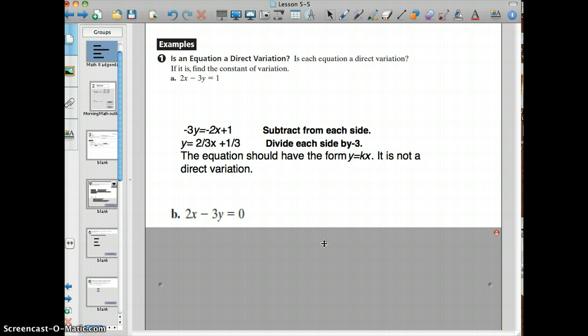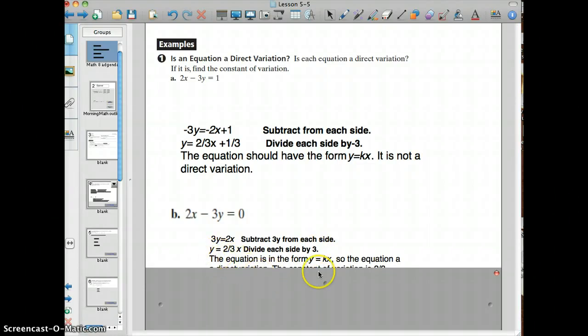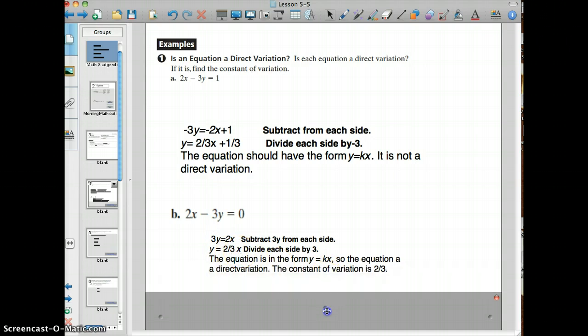If you look at the second equation, we have 2x minus 3y equals 0. So we're going to subtract 2x from both sides, and then we're going to divide both sides by the negative 3. And we end up with y equals 2/3 x. That is in the form y equals k times x, which is a constant times the x. And so we have the constant of the variation here, which is the k of 2/3. So in this case, it is a direct variation.